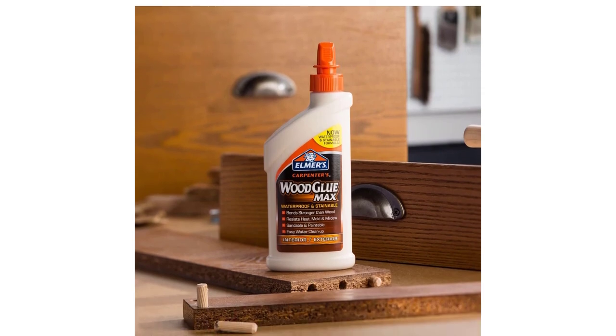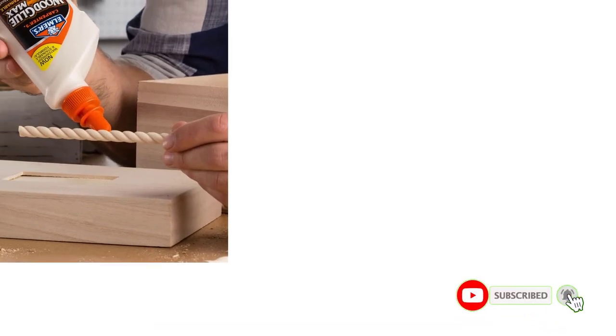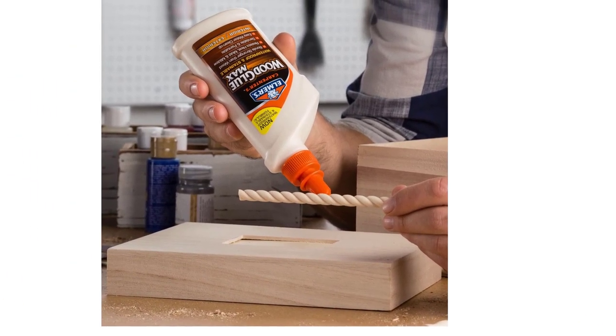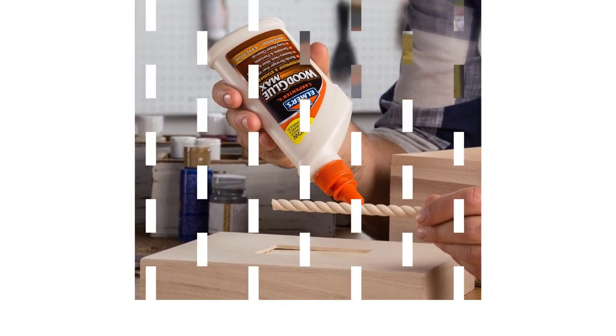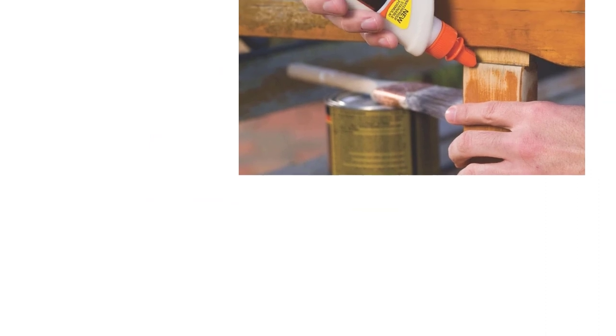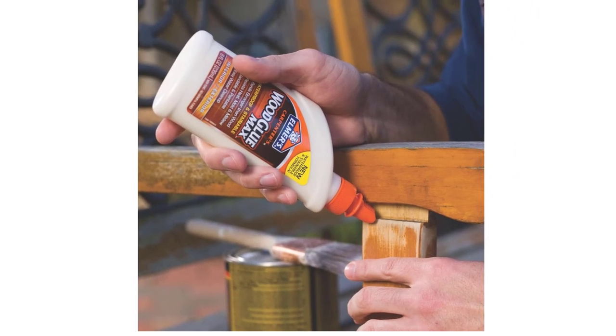It's also heat, mildew, and mold-resistant, so you may use it for a wide range of tasks. One hitch of this product is that the adhesive is thick and difficult to squeeze out of a 16-ounce bottle. You should also ensure that the top is appropriately screwed on because the glue will dry up quickly.